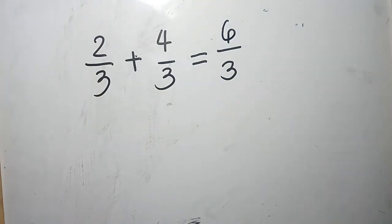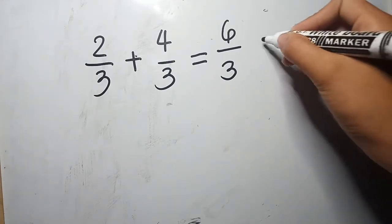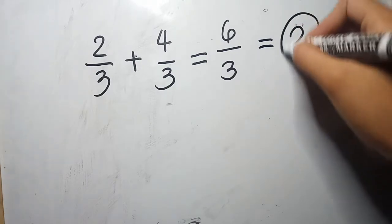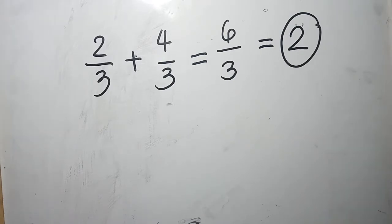As you can see, the fraction can still be simplified. 6 divided by 3 is equal to 2. Therefore, when we add 2 thirds and 4 thirds, the answer or the sum will be 2.